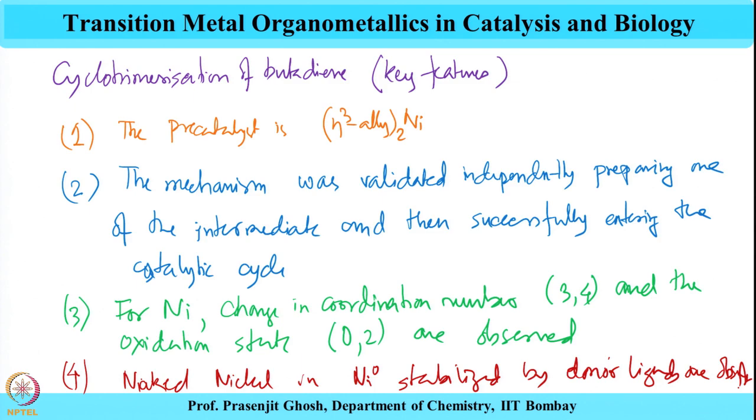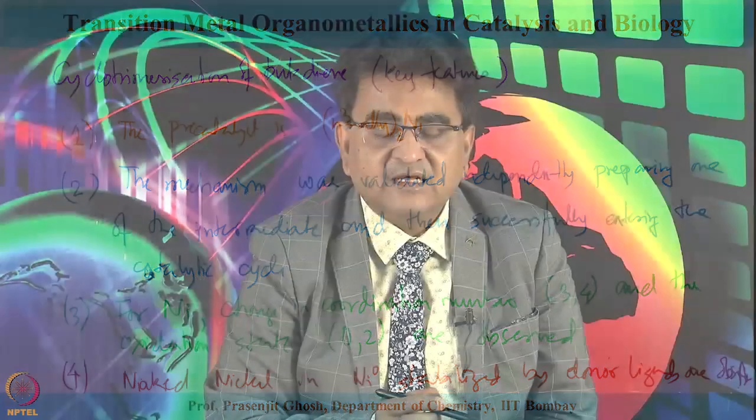Naked nickel(0) stabilized by donor ligands is observed in this process and is part of the catalytic cycle. The catalytic cycle is validated by entering through one of the independently prepared catalytic intermediates. The metal displays a flexible coordination mode by changing coordination number from 3 to 4, as well as a flexible oxidation state by changing from 0 to 2.